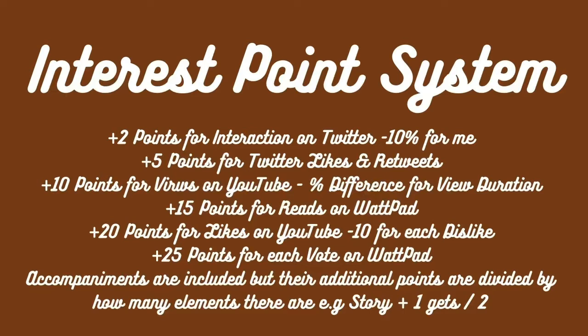The interaction on Twitter — I'll remove 10% of the points gained from that for myself, because some of the interactions are obviously going to be from me. For views on YouTube that'll be 10 points, and I will look at the viewing average of each video, finding the difference between 100 and that average and taking it away from the points. Decimal points I'll round up if over five and round down if under five. Then 15 points for each read on Wattpad, 20 points for each like on YouTube minus 10 points for every dislike, and 25 points for each vote on Wattpad.